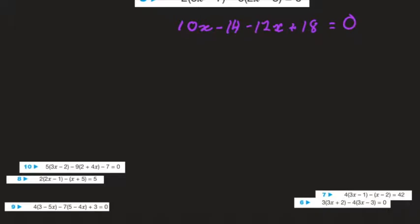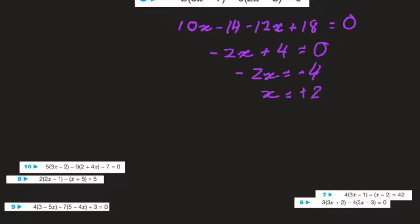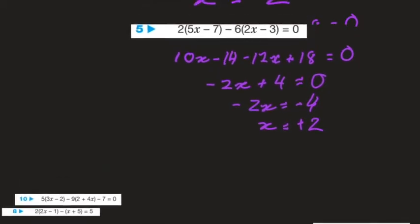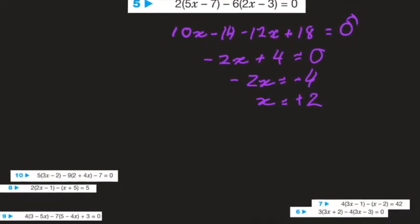Grouping like terms: 10x minus 12x is minus 2x, minus 14 plus 18 is plus 4, equals 0. Subtracting 4 from both sides, minus 2x equals minus 4. Dividing both sides by negative 2, x equals positive 2, because negative divided by negative is positive. And look — it's the same answer!